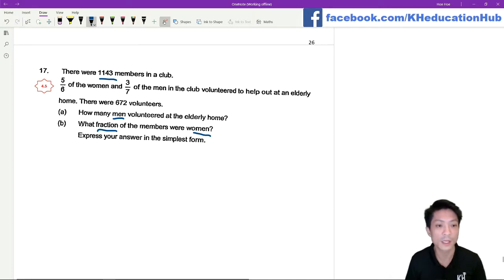This question is exactly the same as the question in front, which means that 5 over 6 of the women plus 3 over 7 of the men is equal to 672. We know that the total women plus the total men is 1,143.